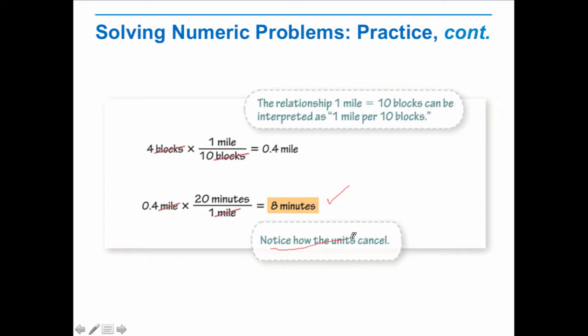It's very important to notice that the units cancel. Now we have to think, does this make sense? Let's think about it. If our rate is 1 mile is 20 minutes, are we walking less than a mile? Yes. So it should be less than 20 minutes. If we walked half a mile, it should be about 10 minutes. 0.4 miles is a little bit less than that, so 8 minutes does make sense. Did you see how I evaluated that?